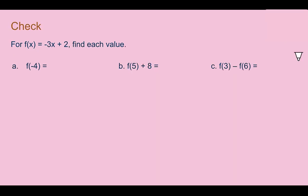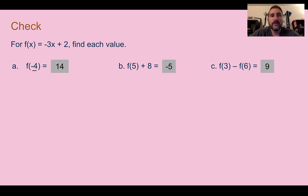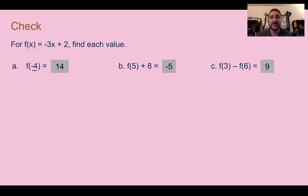Check your understanding: for f of x equals negative 3x plus 2, find each value. If you plug in negative 4, you get 14 — since negative 3 times negative 4 is positive 12, plus 2. If you plug in 5 you get negative 13, then adding 8 gives negative 5. For f of 3 minus f of 6: f of 3 is negative 7, f of 6 is negative 16, and negative 7 minus negative 16 equals positive 9.